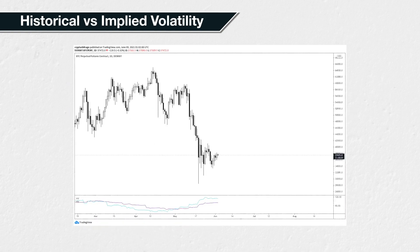If we take this chart of the price of Bitcoin as an example, historical volatility measures what has already happened on the left side of the chart. It measures how volatile the price movements have been over a set period of time in the past. At the bottom of the chart, I have two historical volatility indicators showing — one measuring volatility over the last 30 days, and the other over the last 60 days — both displayed as an annualized percentage.